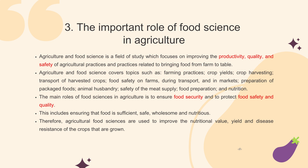The next subtopic is the important roles of food science in agriculture. Agriculture and food science focuses on improving the productivity, quality, and safety of agricultural practices and bringing food from farm to table. It covers topics such as farming practices, crop yields, crop harvesting, transport of harvested crops, food safety on farms, during transport and in markets, preparation of packaged foods, animal husbandry, safety of the meat supply, food preparation and nutrition. The main roles of food science in agriculture are to ensure food security and to protect food safety and quality.